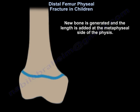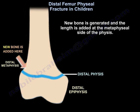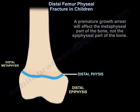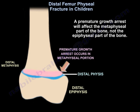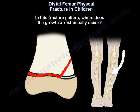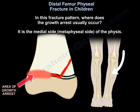New bone is generated and length is added at the metaphyseal side of the physis. A premature growth arrest will affect the metaphyseal part of the bone, not the epiphyseal part. In this fracture pattern, growth arrest usually occurs on the medial, metaphyseal side of the physis.